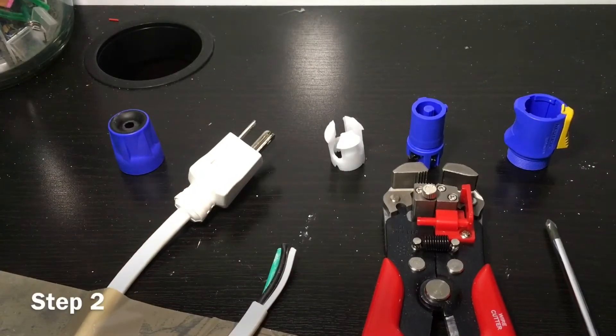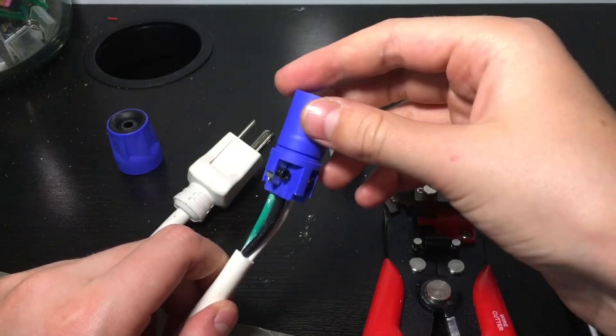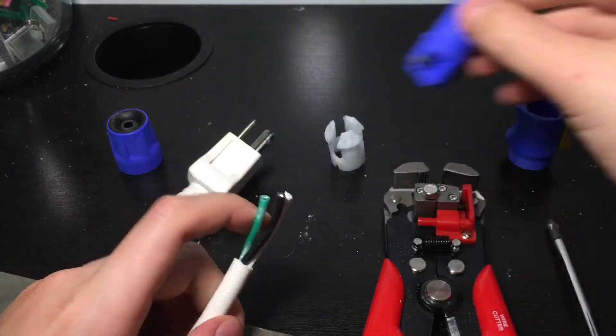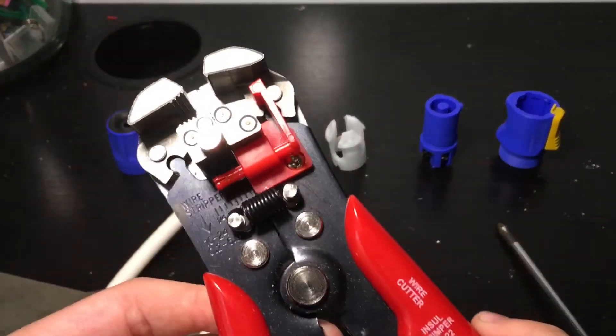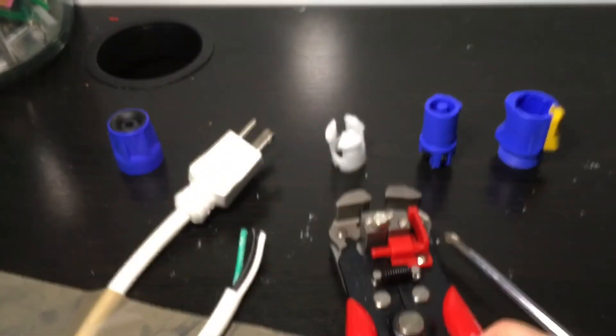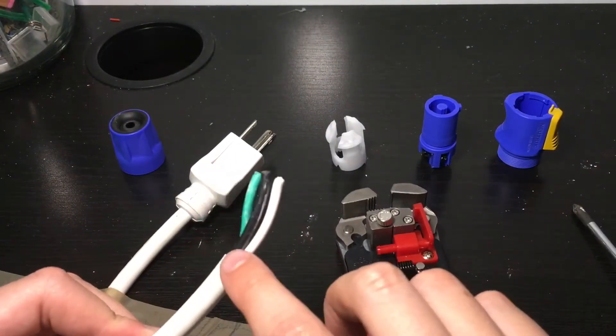Now you're going to do step two, which is to put the PowerCon jack onto the cable. What you're going to need for this step is your wire stripper, your screwdriver, your PowerCon jack, and your cut cable.